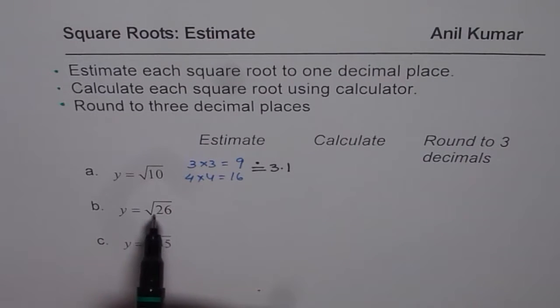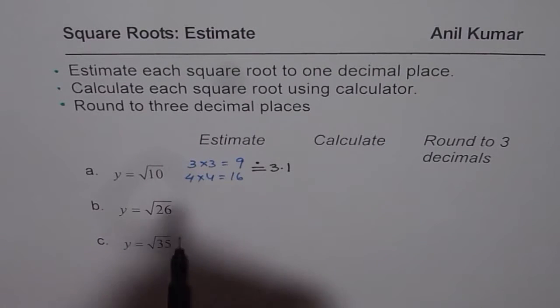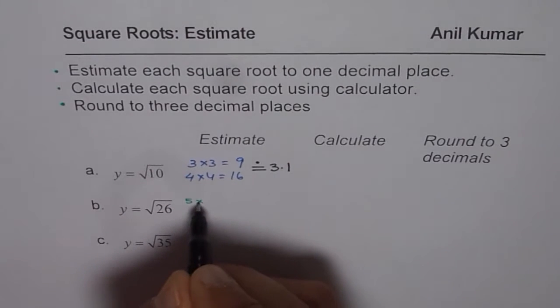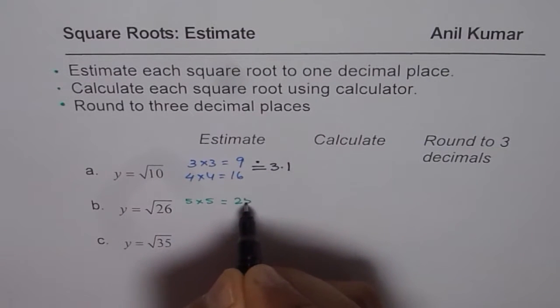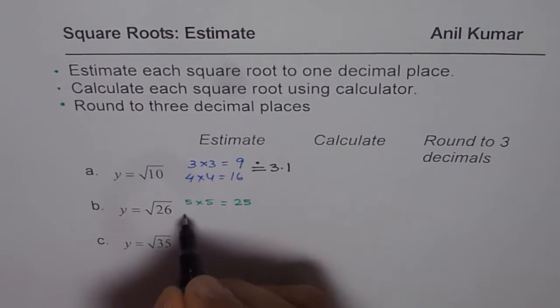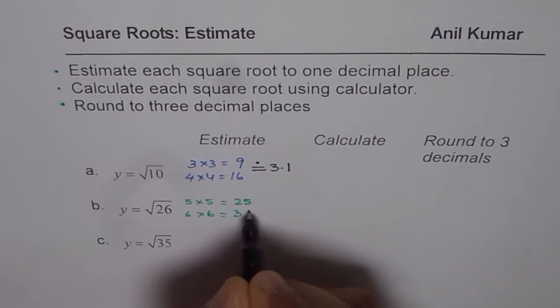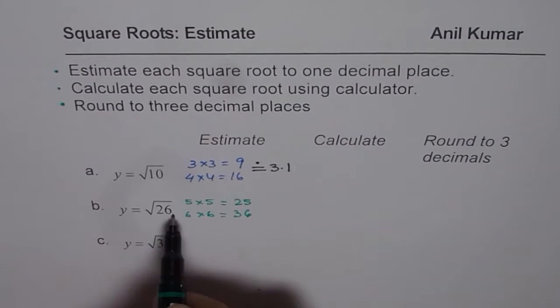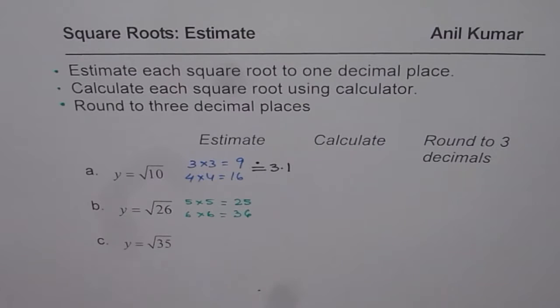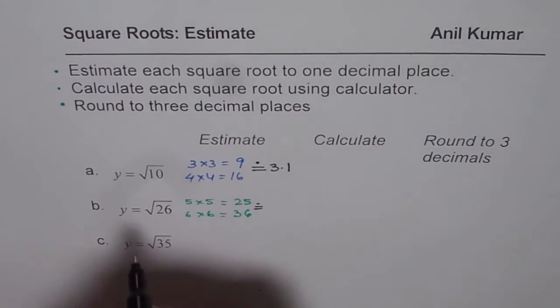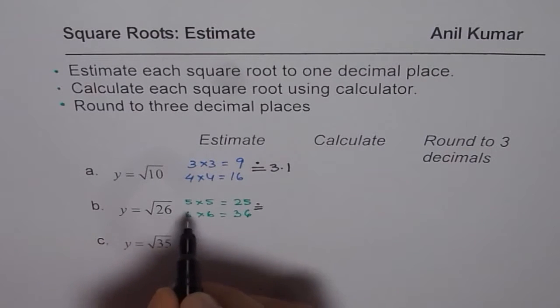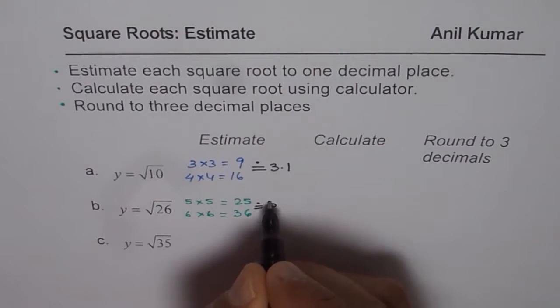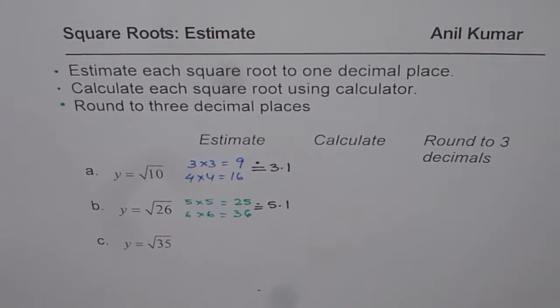For 26, the closest perfect square we know is 25. 5 times 5 is 25, and 6 times 6 is 36. Since 25 and 26 are very close, and 26 is slightly more than 25, we estimate square root of 26 as 5.1.